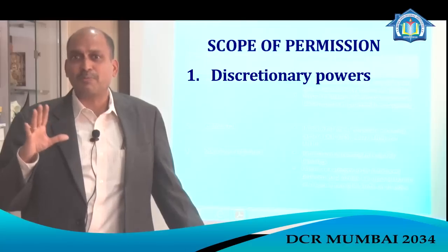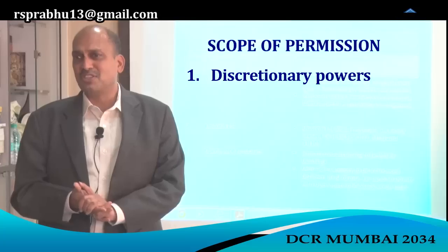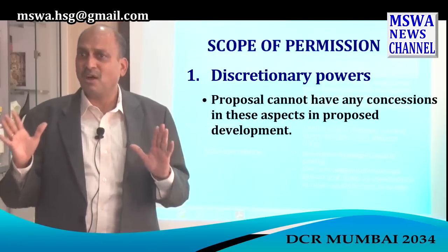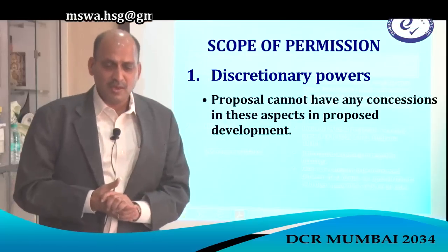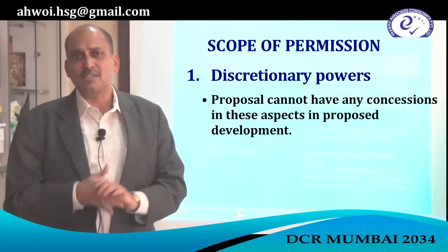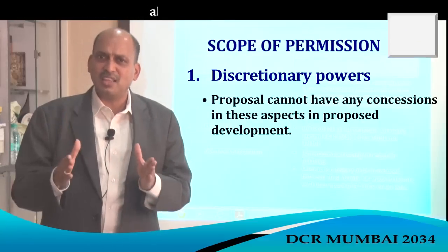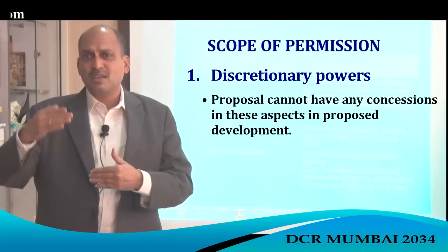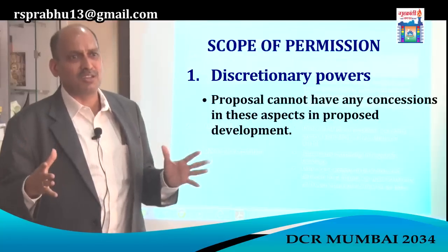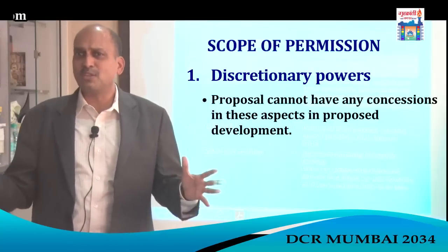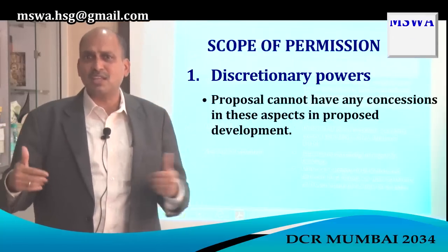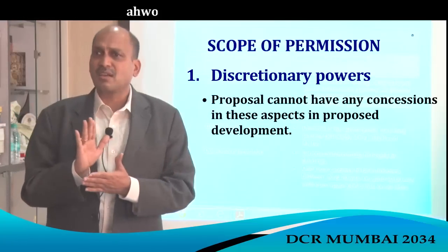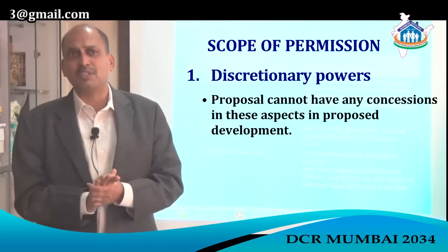Now, in the new Development Control Rule, this concession for open space deficiency has been done away with. That means no more concession. The concession for open space deficiency will not be given. Whatever is in the Development Control Rule, you have to follow. If the government says six meters has to be left open, you have to leave six meters. You cannot ask for a concession — that is not permitted.